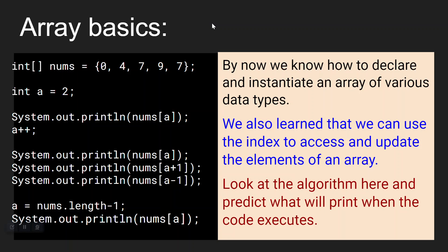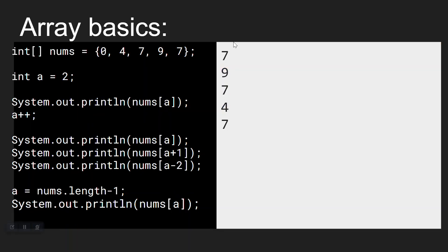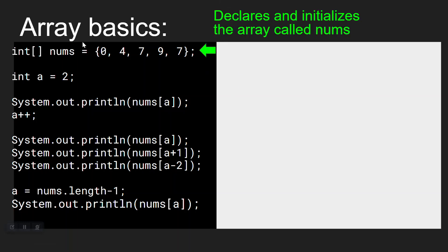I'm going to assume that you paused the video and made your prediction. Let's go ahead and look at the answer. So what it's going to print would be 79747. But the question is, why, and how do you read through this code in order to understand this? Let's run through this just like Java would — top to bottom, line by line.